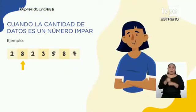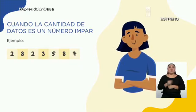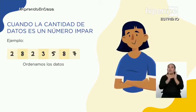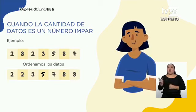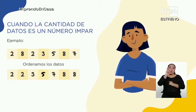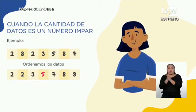Tenemos otro ejemplo con una cantidad de datos impar. Encontraremos la mediana de los siguientes datos: 2, 8, 2, 3, 5, 8 y 7. Realizamos el primer paso: ordenamos los datos en orden ascendente: 2, 2, 3, 5, 7, 8 y otro 8. ¿Cuántos datos tenemos? Contamos y vemos que son 7 datos. El 7 es un número impar. Vamos a encontrar el valor que se encuentra en el centro. ¿Cuál es? El 5. Así de simple. Entonces el valor de la mediana es 5.